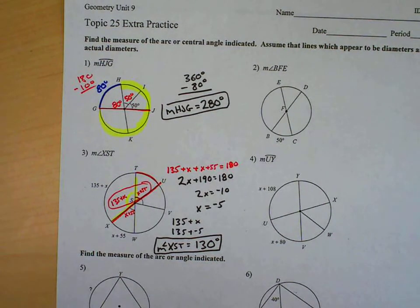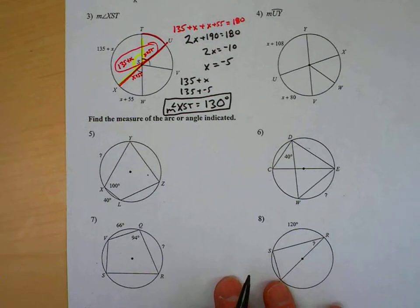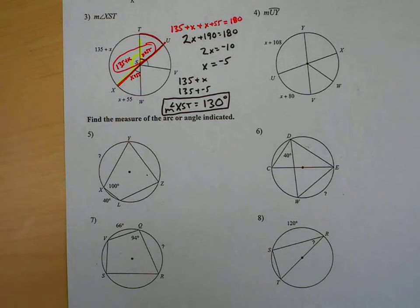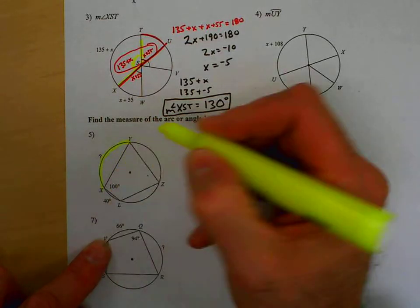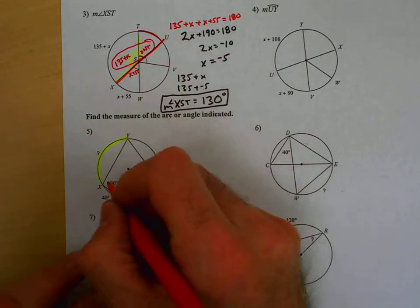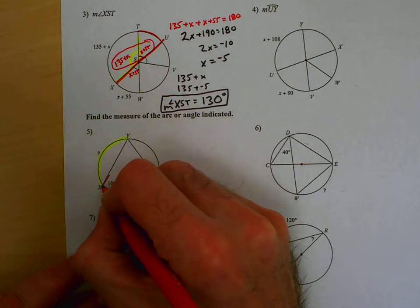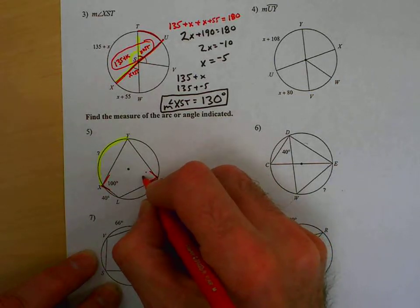So, you have both of those, 1 and 3. Let's move on to number 5. Number 5, here, they say, find the measure of the arc or angle indicated. Well, the question mark is the indicated arc, XY. And if we look at this, I would say that we have an inscribed quadrilateral, so this angle and this angle have to add up to 180. Well, if that's 100, it doesn't take a lot of math to figure this must be 80.